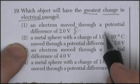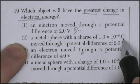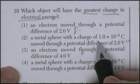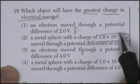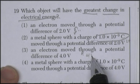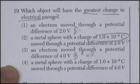A metal sphere with a charge moving through a potential difference of 2 volts. So this is a much larger charge. An electron moving through a potential difference of 4 volts. And a metal sphere with a charge of 1 times 10 to the negative 9 coulombs, moving through a potential difference of 4 volts.